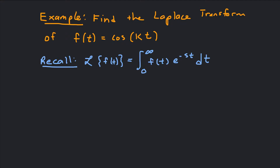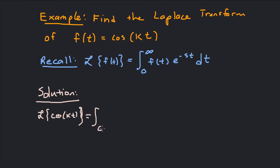The only thing we really need to remember is that the Laplace transform definition is the integral from 0 to infinity of f(t) e to the negative st dt. So what we're going to get is: Laplace transform of cosine kt equals the integral from 0 to infinity of cosine kt times e to the negative st dt.